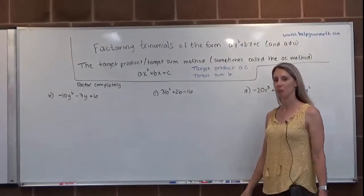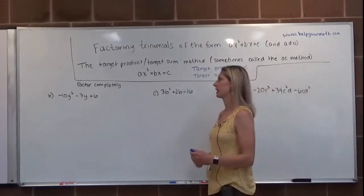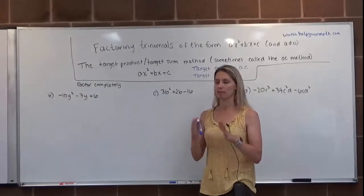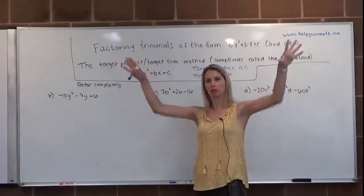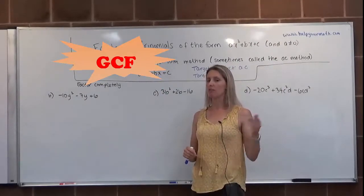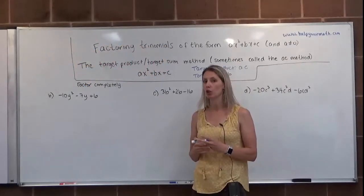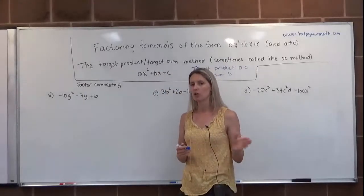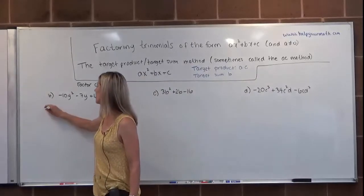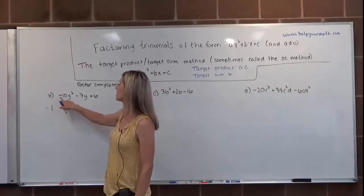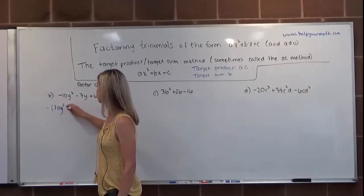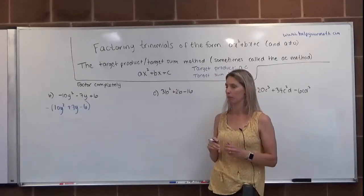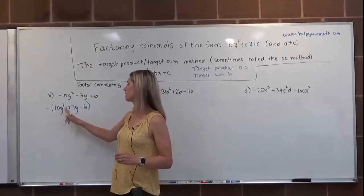Example B: negative 10y squared minus 7y plus 6. With any factoring method, always check first if there's a GCF of the three terms. Also, the leading term is negative, and we generally don't want that. Even though the GCF of the three terms is 1, we factor out a negative 1 to make the leading term positive. This changes all the signs, giving us negative 1 times (10y squared plus 7y minus 6).